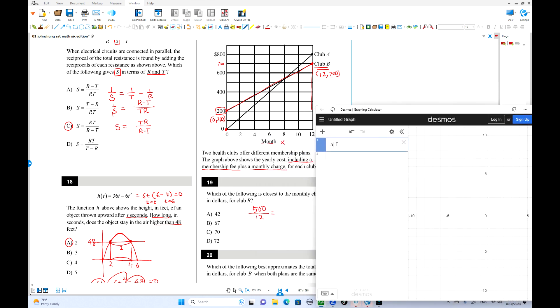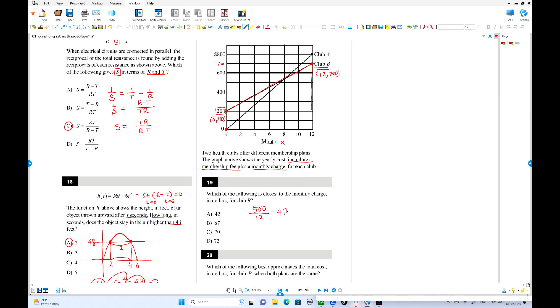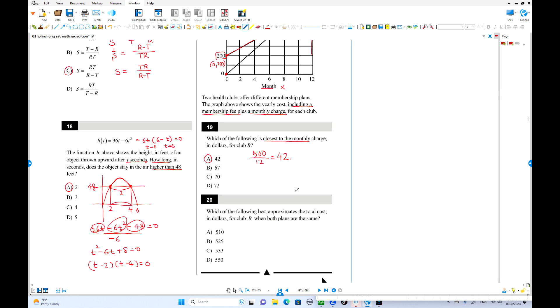So 500 over 12 is 41.6. So 42 is the answer right over here. Closest to the charge.